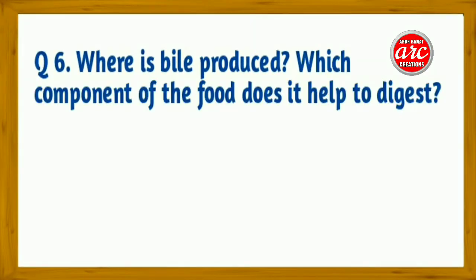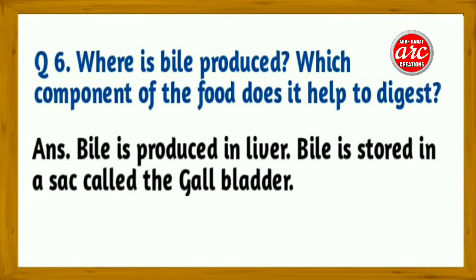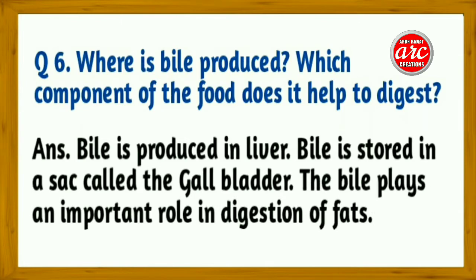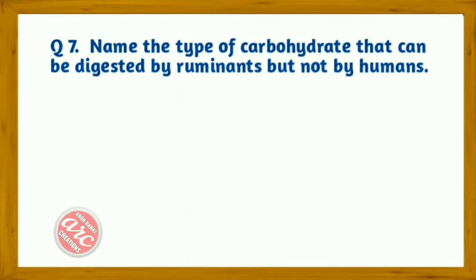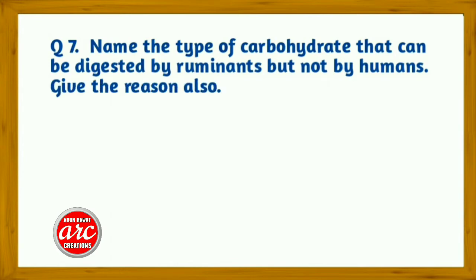Question 6: Where is bile produced? Which component of food does it help to digest? Answer: Bile is produced in the liver and stored in a sac called the gallbladder. Bile plays an important role in the digestion of fats.